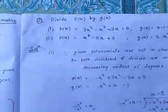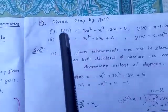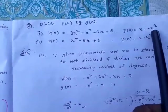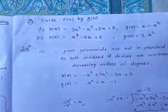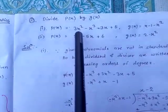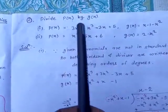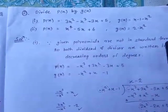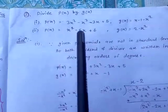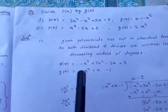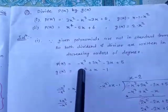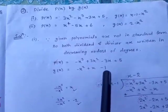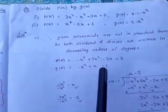Now we move to the second question: divide P(x) by G(x), where P(x) = 3x² − x³ − 3x + 5 and G(x) = x − 1 − x². Here P(x) and G(x) are not written in standard form, so we rewrite in decreasing order. P(x) = −x³ + 3x² − 3x + 5 and G(x) = −x² + x − 1. Both are now in standard form, and we proceed to divide.